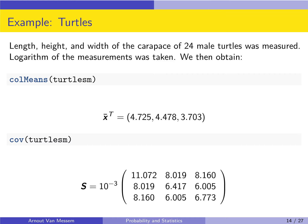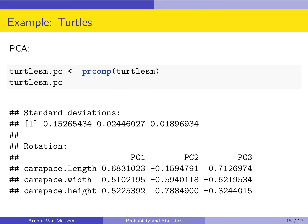In this example, the length, height, and width of the carapace of 25 male turtles was measured. To make the variables more symmetrical, the logarithm of length, height, and width was taken. Inspecting the dataset, we find an average log-length of 4.725, an average log-width of 4.478, and an average log-height of 3.703. The variance-covariance matrix is given by S on the slide. To find the principal components in R, we use the function prcomp applied to the dataset TurtlesM.